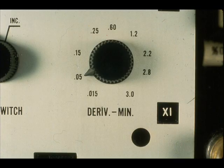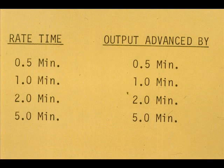Rate or derivative time is measured in minutes. A rate time of one minute means the controller output is advanced one minute ahead of what it would be with proportional action only.